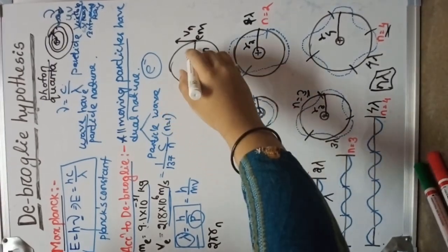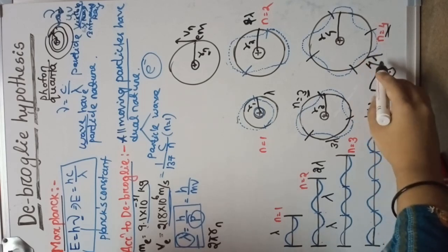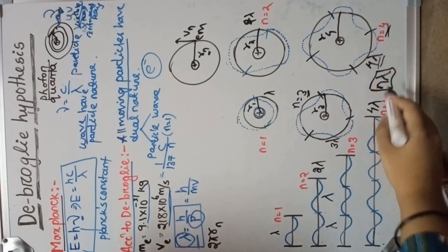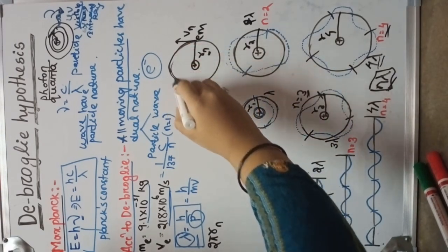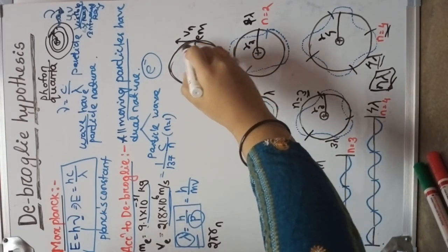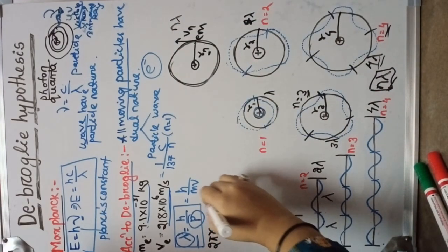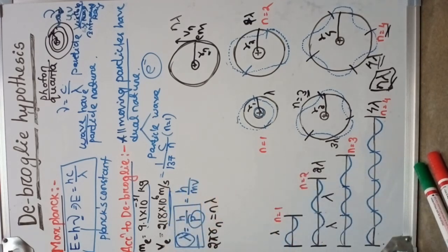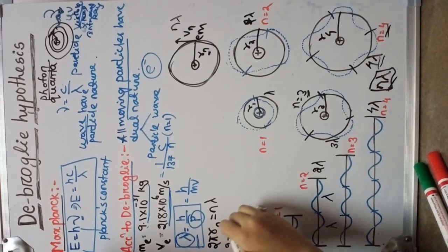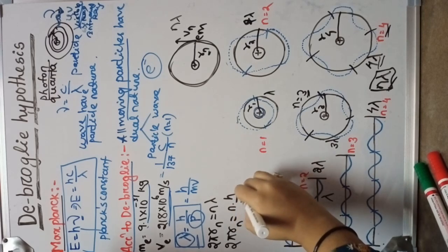In the total circumference two pi rn, how many waves are formed? For the first orbit, one wave of wavelength lambda is formed. For the nth orbit, n lambda waves are formed. So in the circumference two pi rn, n lambda waves are formed, giving us two pi rn equals to n lambda. Putting the value of lambda equals to h by mv, we get two pi rn equals to n into h by m vn.